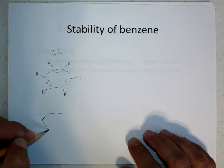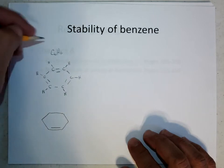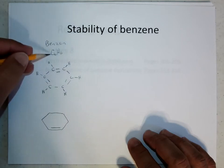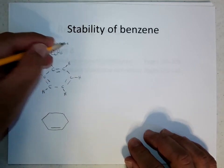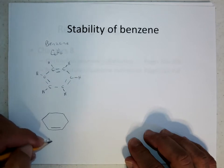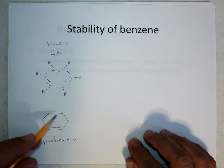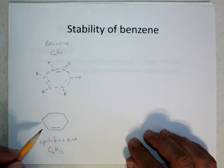On the other hand, if you had cyclohexene, so benzene, C6H6, has this structure. Cyclohexene has this structure, six carbons and the double bond, C6H12.